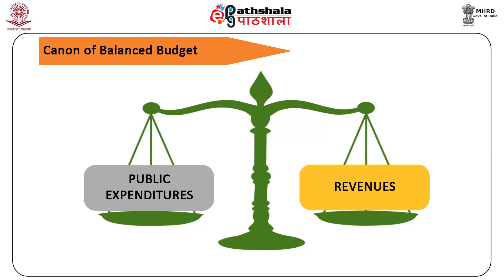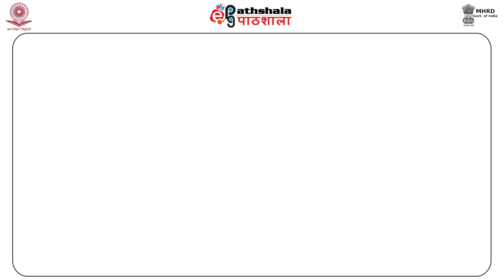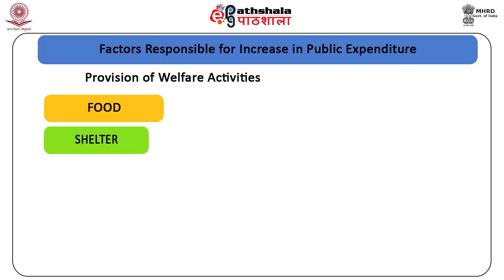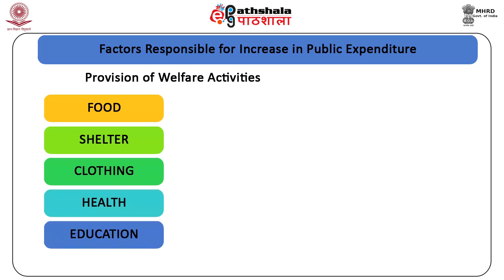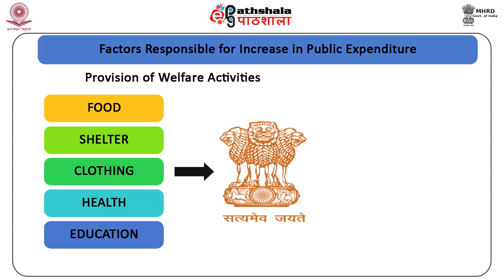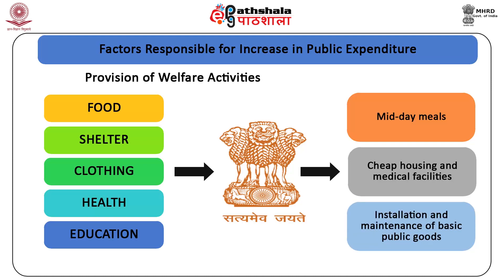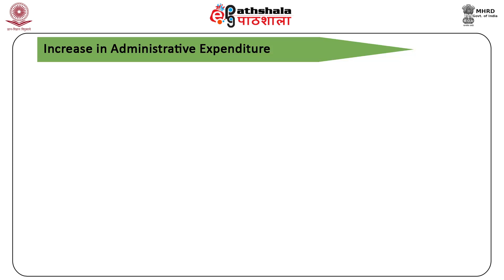Regarding factors affecting public expenditure, the first factor is provision of welfare activities. The government plays the role of a provider of basic necessities and social welfare benefits to the weaker and dependent population of the country. To ensure basic necessities like food, shelter, clothing, health and education are provided to the masses, the government needs to engage in schemes like midday meals, cheap housing and medical facilities, installation and maintenance of basic public goods like transportation and power.